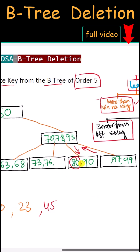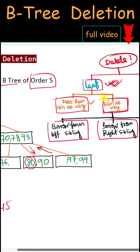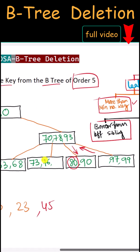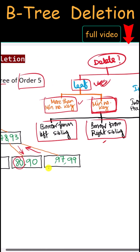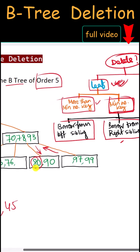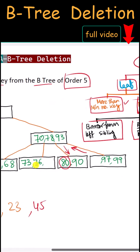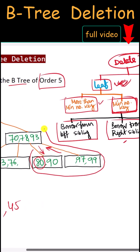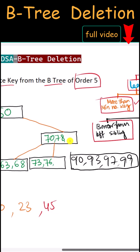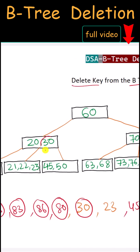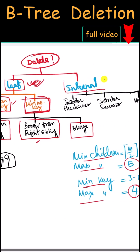Next we have 80. This is a leaf node with the minimum number of keys. We cannot borrow from the left sibling because it also has the minimum number of keys. We cannot borrow from the right sibling either, so we have to merge. We merge with the right sibling along with the parent key, and this node will be on the right side of 78.